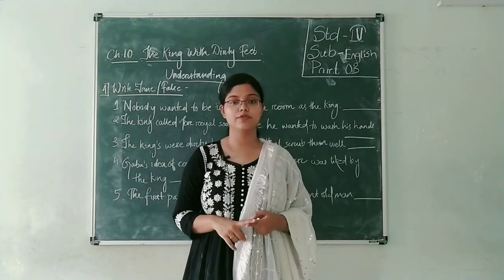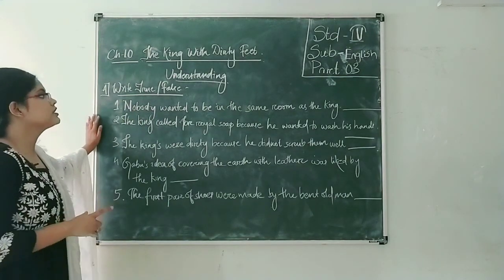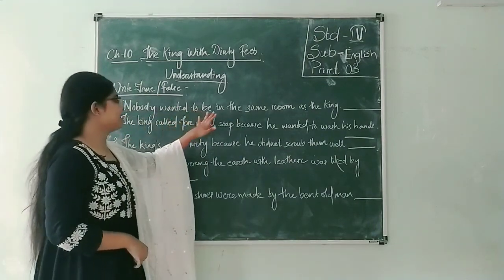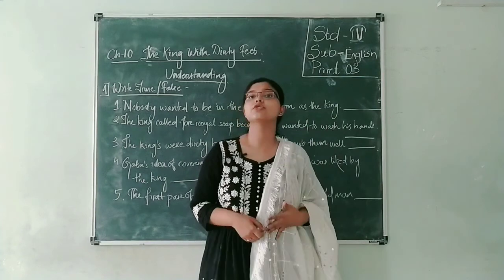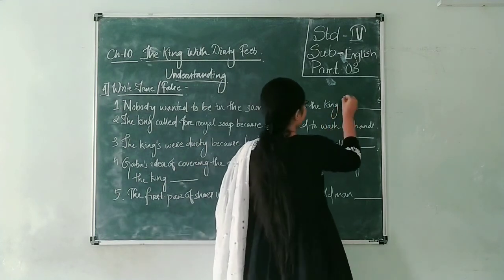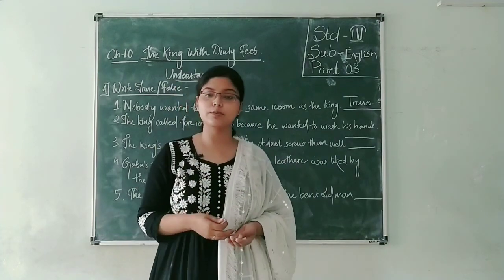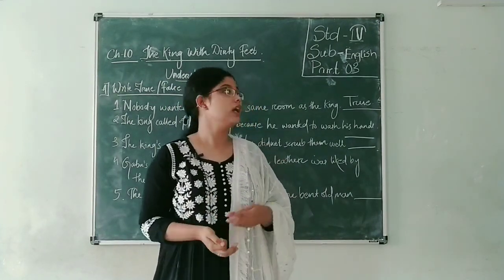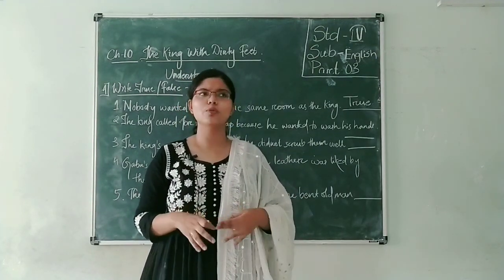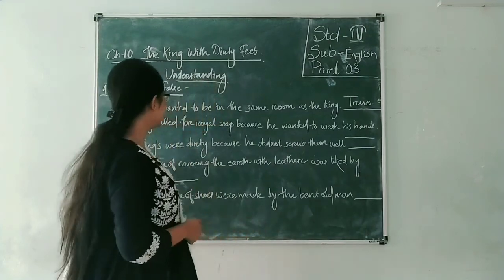The first one is: write true and false against each statement. The first question says, 'Nobody wanted to be in the same room as the king.' We need to write if it is true or false. This statement is true. Why did nobody want to be in the same room as the king? Because the king did not take a bath. He was the smelliest king of all time, so nobody wanted to be in the same room as him because he smelled a lot.